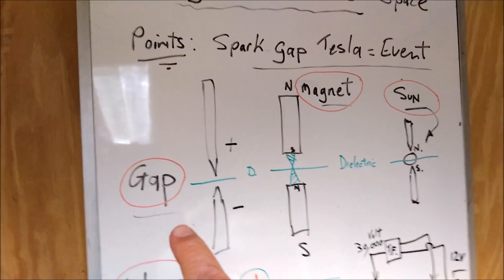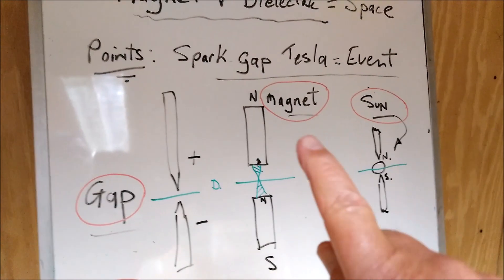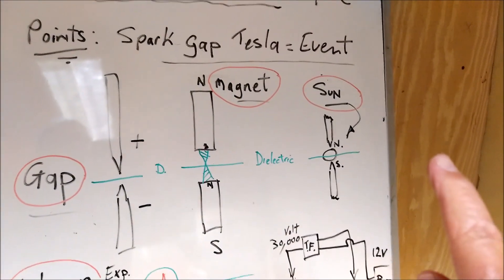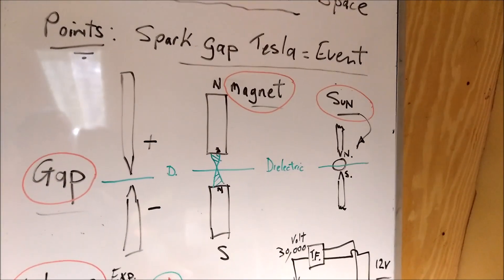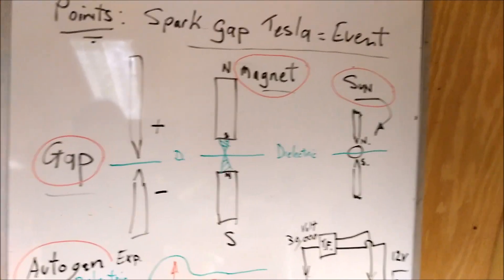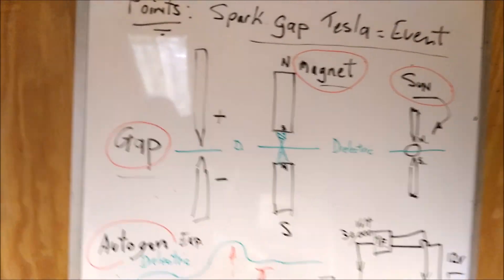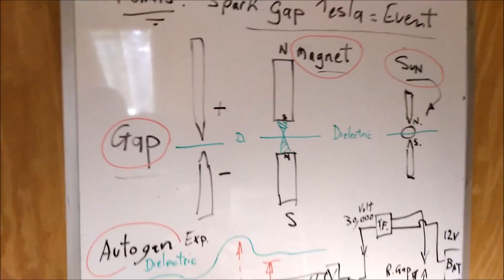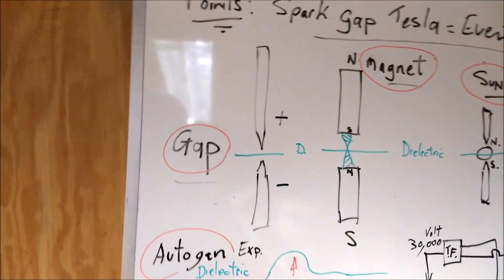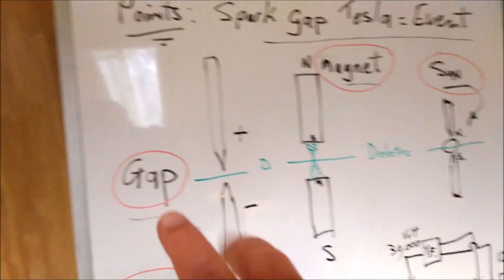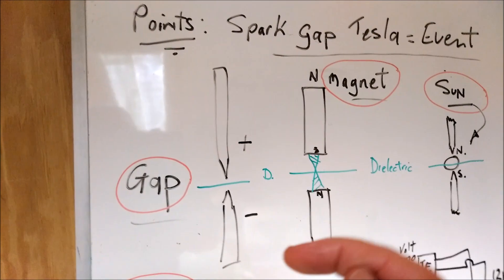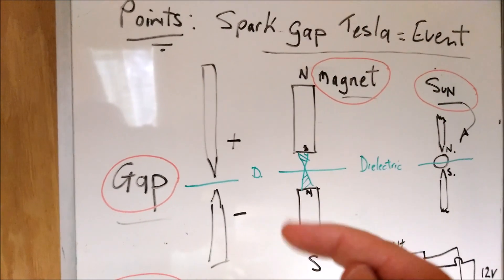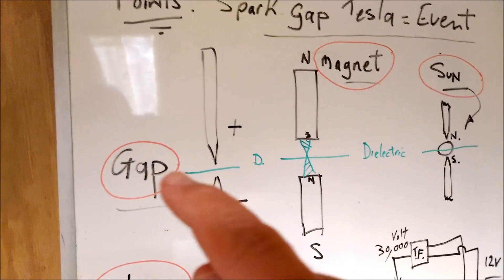So I'm looking at three things together here: the spark gap, a magnet, and our sun. And there's a common denominator, which is obviously the ether, which is space. So I'm looking at all three. There's a connection is what I'm trying to say with Nikola Tesla spark gap.